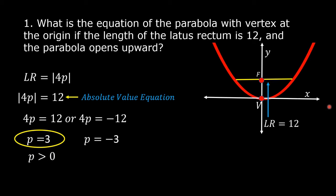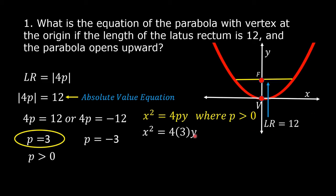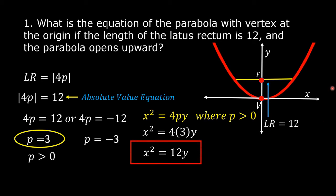Since the parabola opens upward, we choose p equal to 3 where p is greater than 0. The equation of the parabola is in the form x squared equal to 4py where p is greater than 0. Replacing p by 3, we have x squared equal to 4 times 3 times y, which simplifies to x squared equal to 12y. This is the equation of the parabola with the vertex at the origin if the latus rectum is 12 and the parabola opens upward.